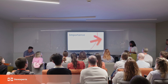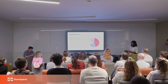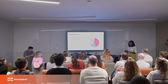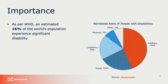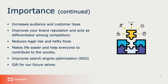As per WHO, 16% of the world population has some kind of disability. So if we are making our content accessible, that means we are attracting 16% of the world population — we can increase our customer base and our audience. At the same time, it shows that we care about people and equal opportunities for everyone. It also improves your brand reputation and acts as a differentiator amongst your competitors. And it also reduces legal risk. We will see the laws later in the session.